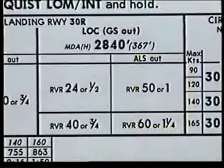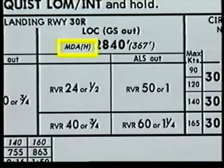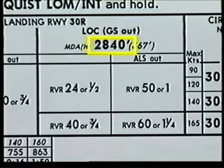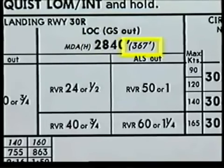For the localizer, glide slope out, or non-precision approach, the figures are labeled MDA(H). The MDA, or minimum descent altitude, is the MSL altitude below which descent may not be made without visual reference. The H, or height, is shown within the parentheses.